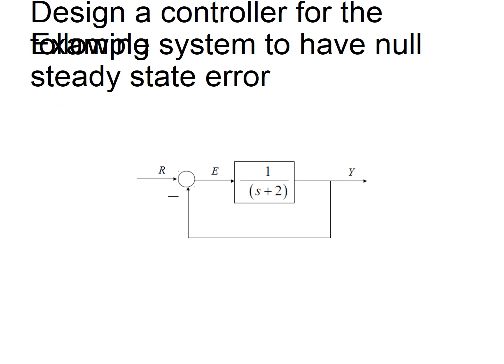Now let us go to another example. This is a similar system but without a pole at the origin. The process has transfer function 1 over (s + 2). We have the same reference and output. The main idea is to have null steady-state error, but we do not have any pole at the origin in the original transfer function. According to the table, it is enough to add a controller — another transfer function — containing a pole at the origin, just in order for this to happen.